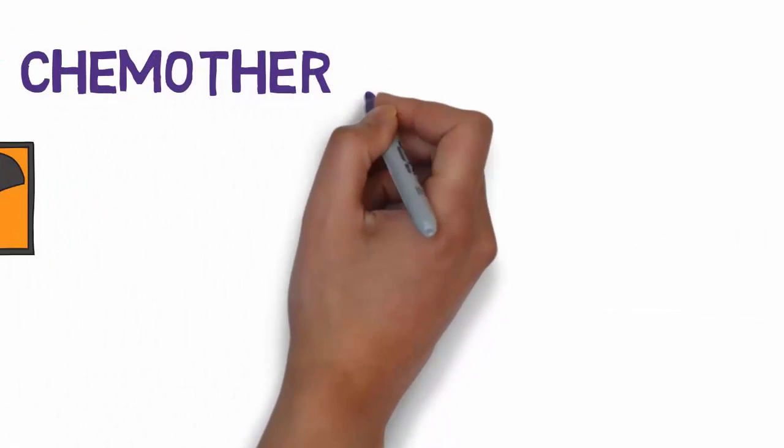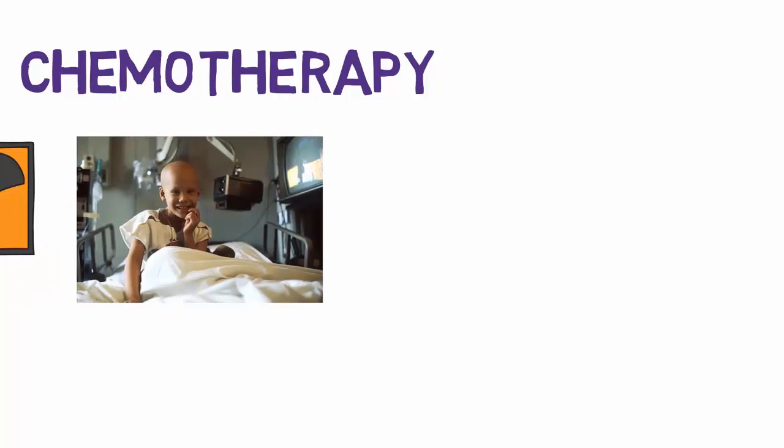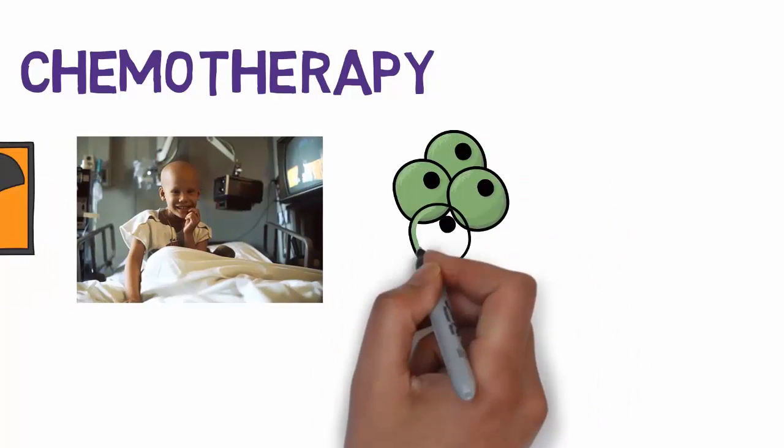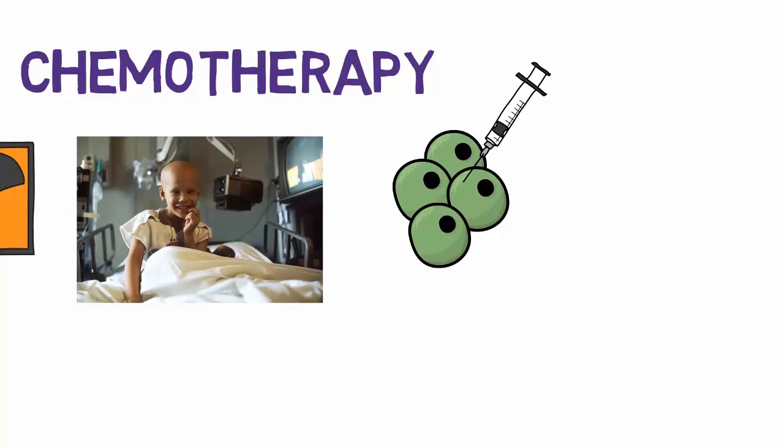Next is chemotherapy. In chemotherapy, drugs are administered to stop the growth of cancer cells. Drugs can do this by killing cancer cells or preventing them from dividing.